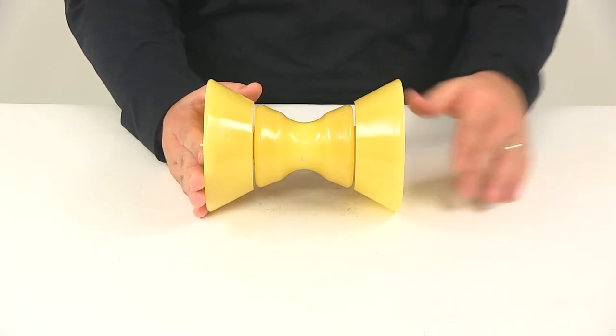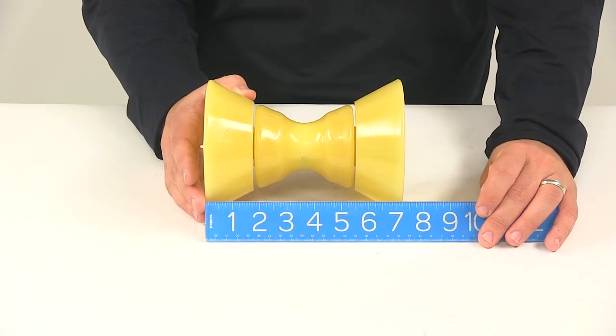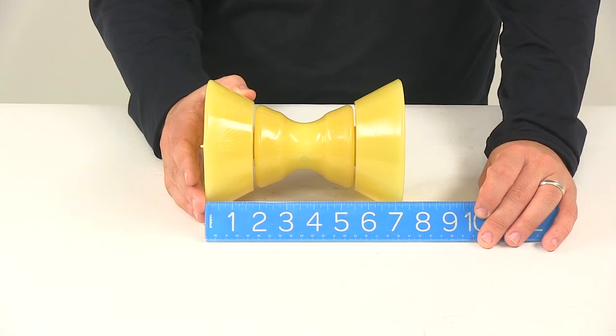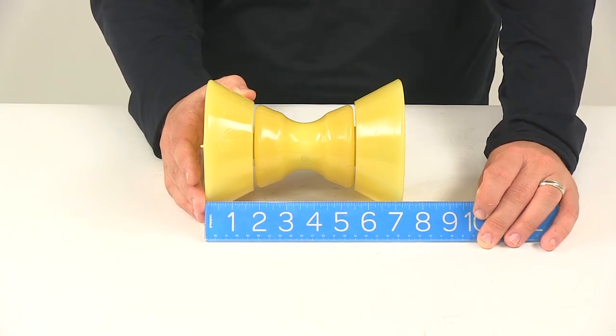The overall length of the unit, measuring edge to edge, is going to be about seven and one quarter of an inch. But please keep in mind that's without the roller bracket installed.